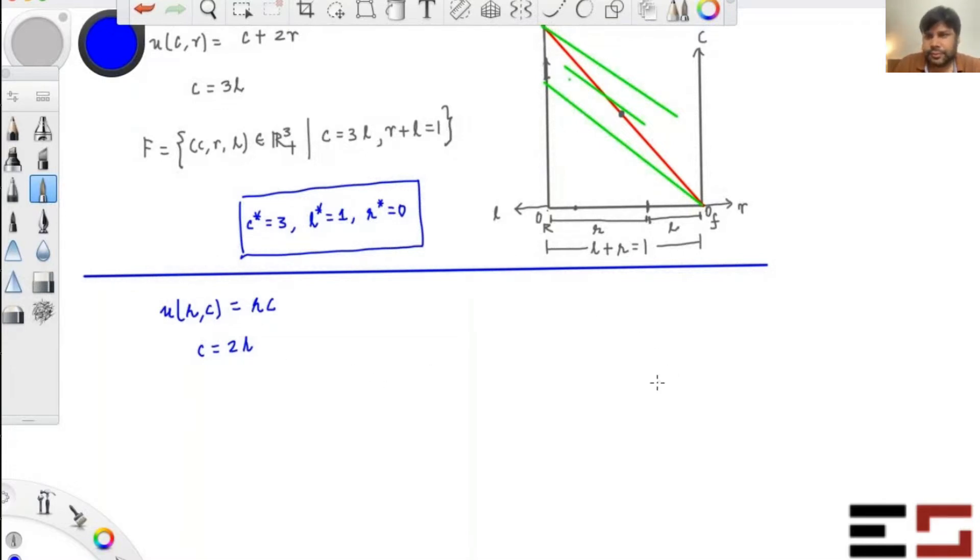So R is half, C is one, L is half and utility is... what are you getting? R is... yeah I think you're right. So L and R both are half and C is two, sorry C is one.